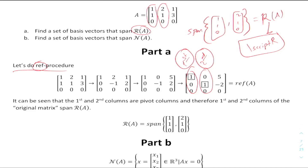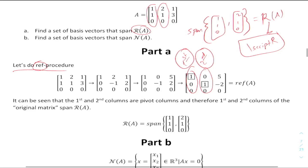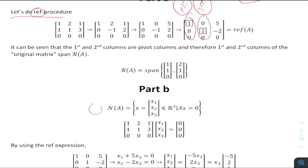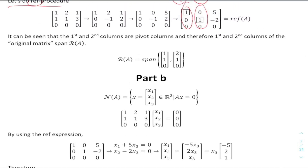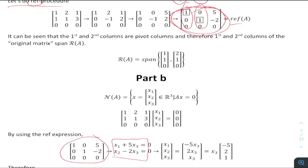Now let's check the null space of the given matrix A. Here is the null space definition. For ease of notation, we use the row reduced echelon form. We write it down and compute x1, x2, and x3. We can use RREF of A instead of the original A.